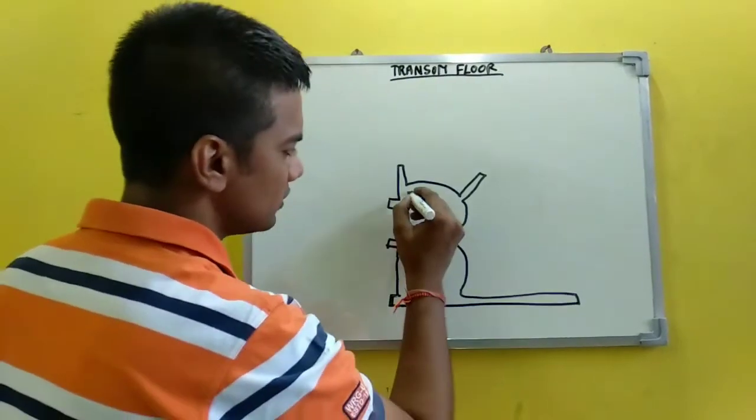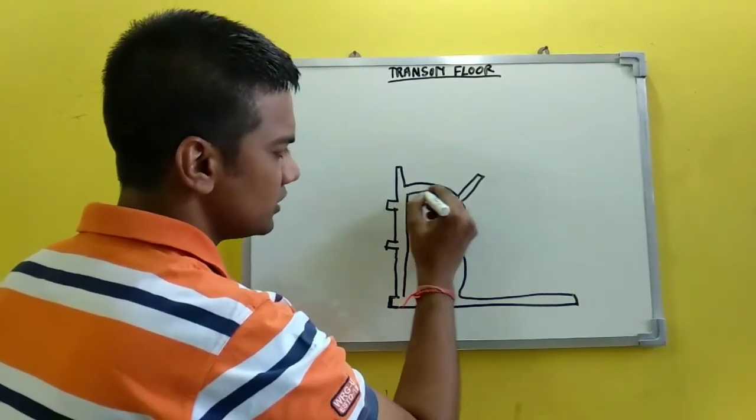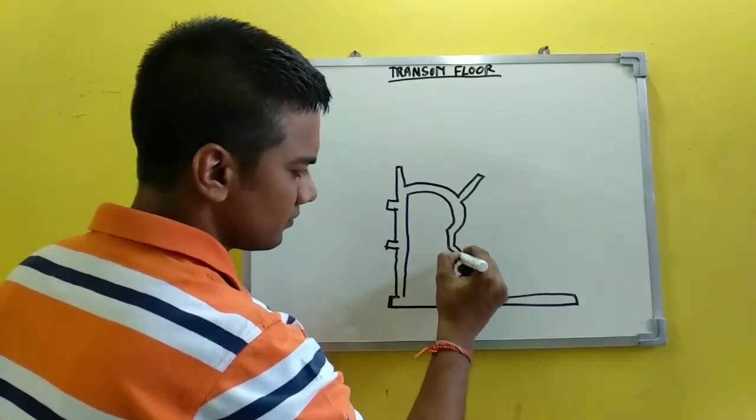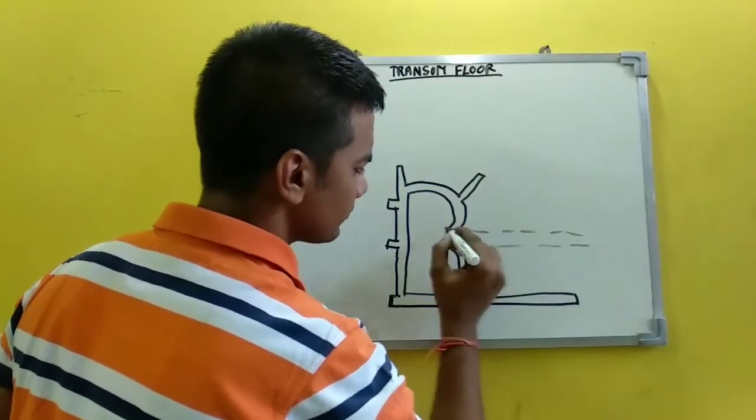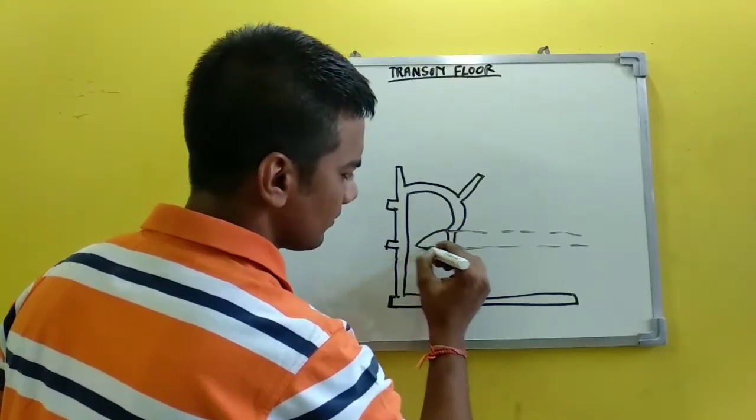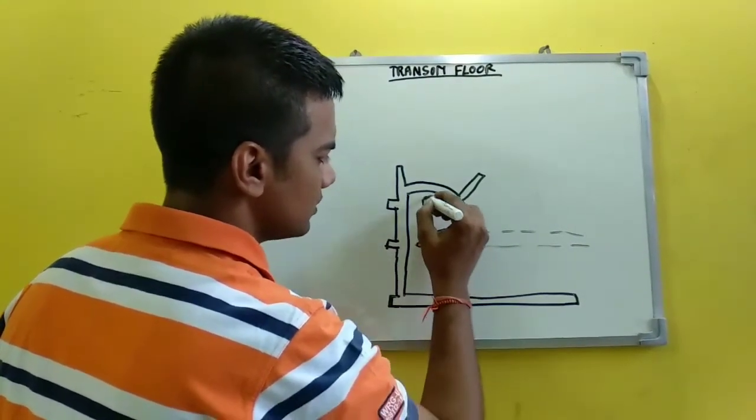So this is what is your stern frame, as you can see over here. This is the stern frame what I am drawing, and this is the stern tube. This is the propeller.